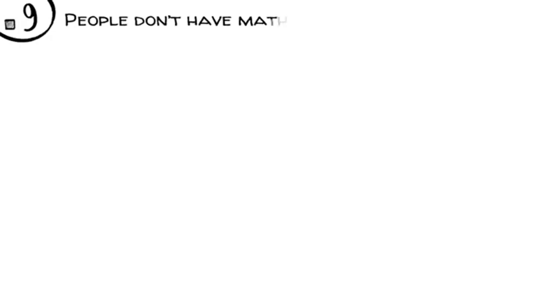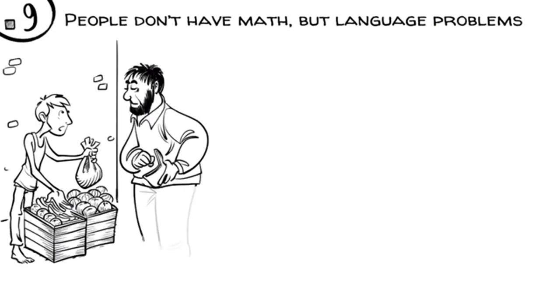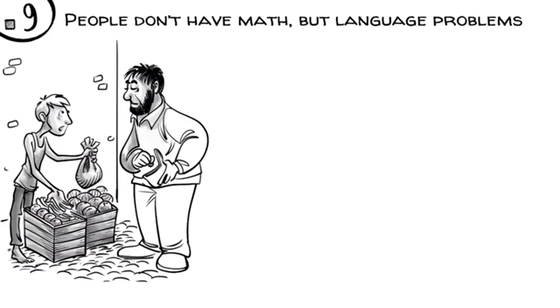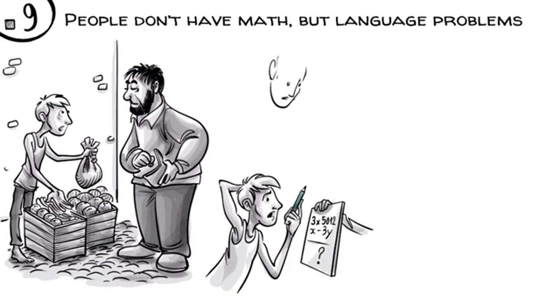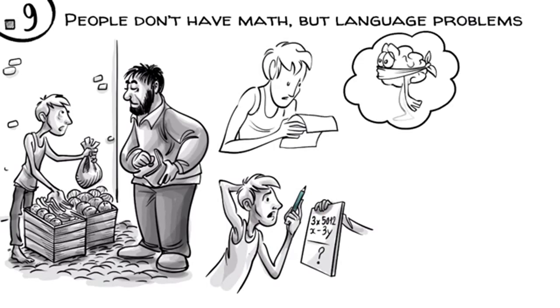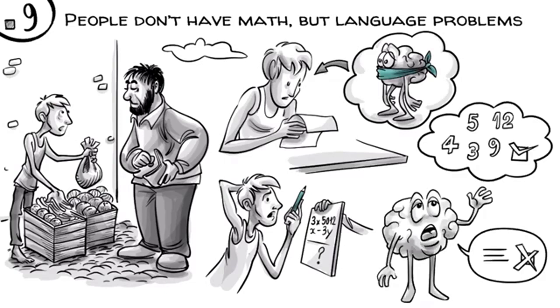Most people don't have math but language problems. We know, for example, that eleven-year-old unschooled street vendors are often highly proficient in complex money transactions but incapable of doing paper and pencil arithmetic. This phenomenon, known as street mathematics, shows that when smart kids struggle in school, they often just can't express their thinking in symbols. Their brains can do math but have language problems.